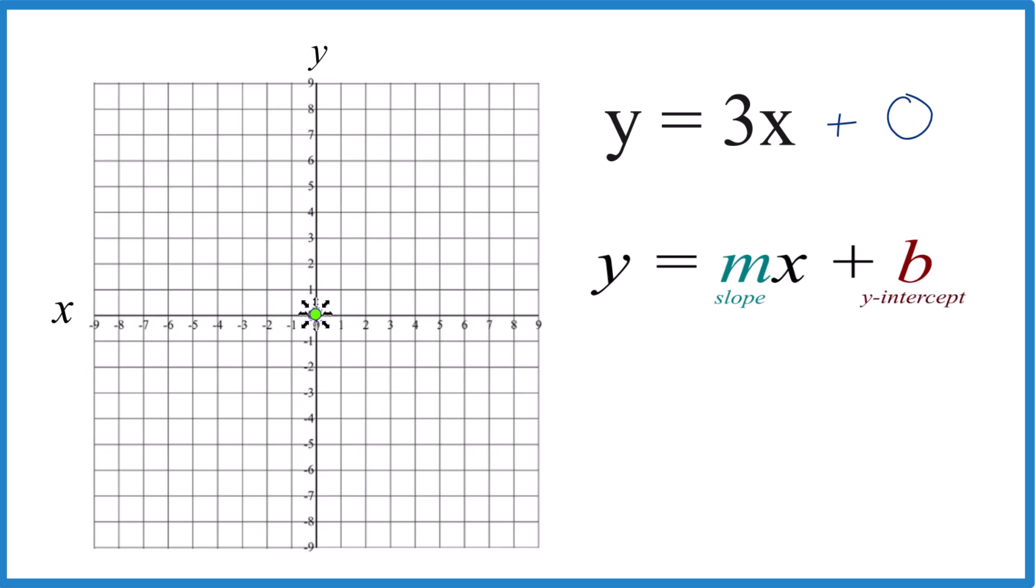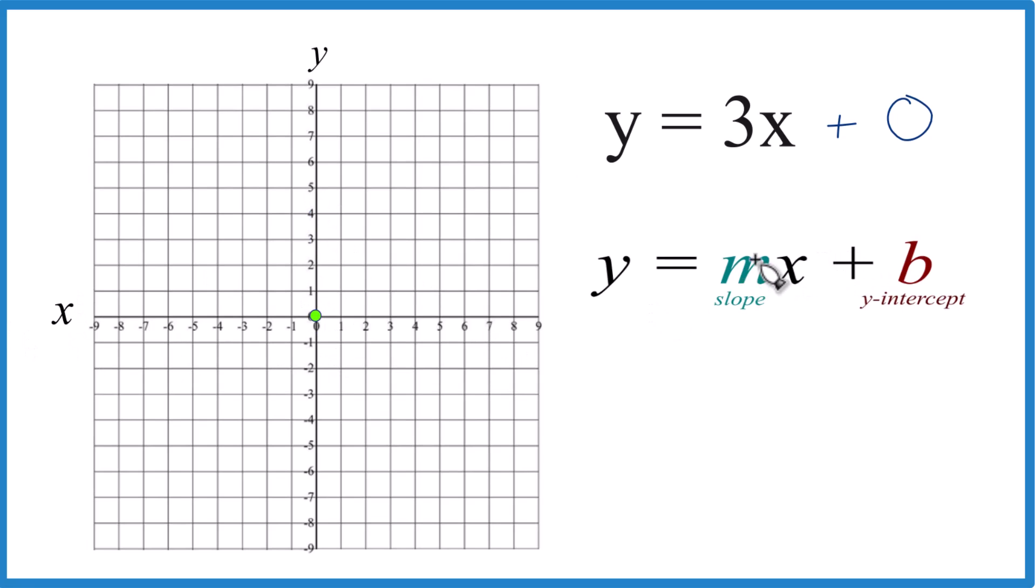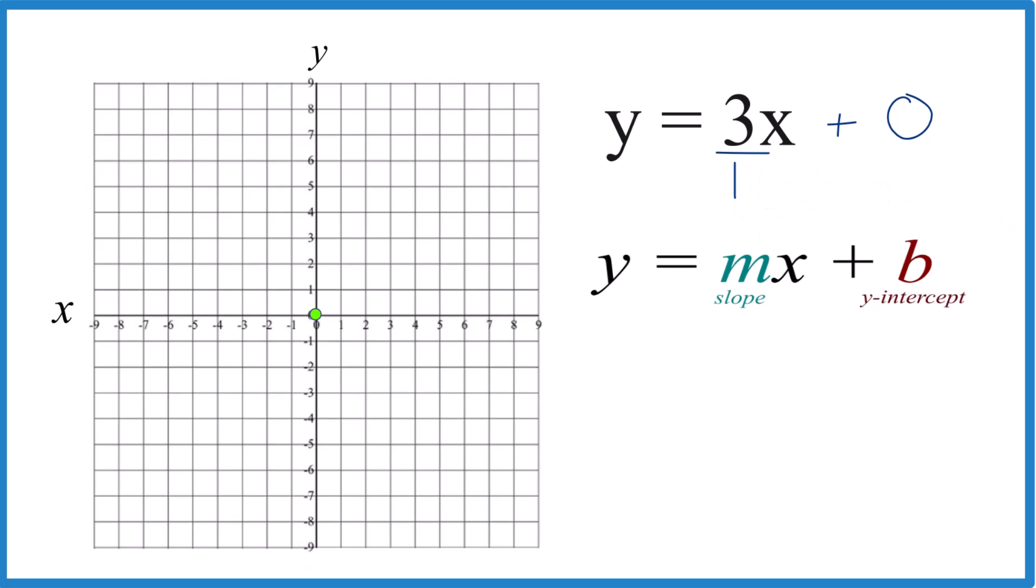That's the first point. For the slope, m, we have 3, but it's better to think about this as 3 over 1, because what that lets us do is call the 3 rise and the 1 run, rise over run.